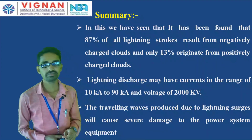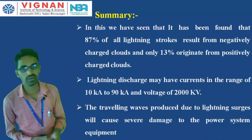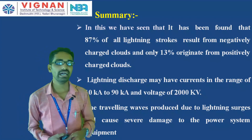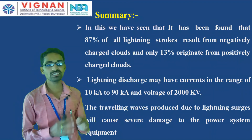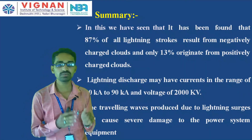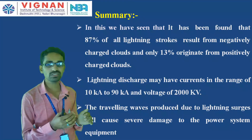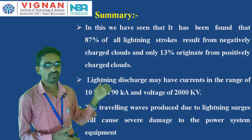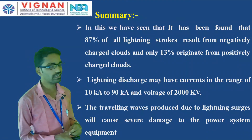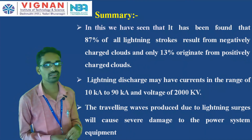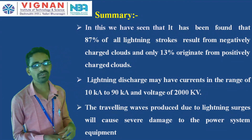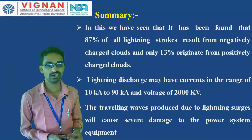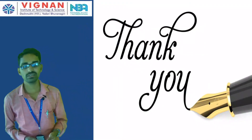In summary: 87% of lightning strokes result from negatively charged clouds (formed by smaller water droplets) and 13% from positively charged clouds (formed by larger water droplets). Lightning discharge currents range from 10 kA to 90 kA and voltages reach 2000 kV. Travelling waves produced due to lightning surges cause severe damage to power system equipment. Thank you everyone.